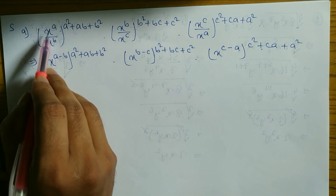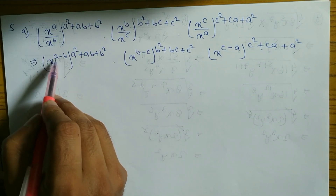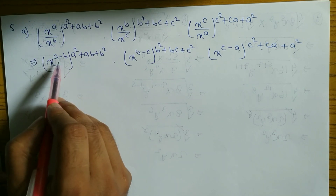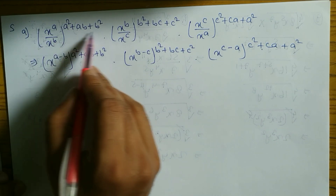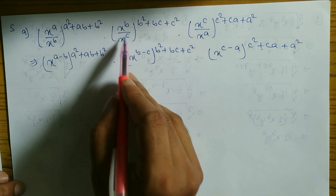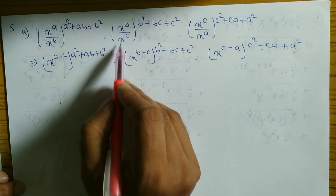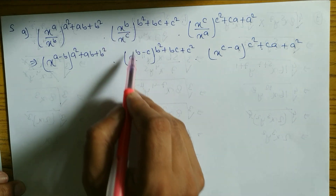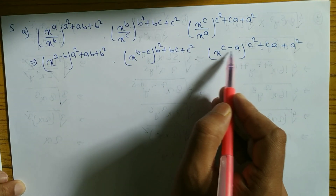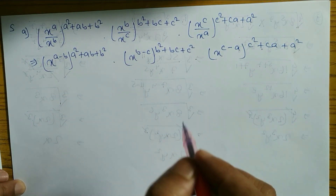Base same — x, x — base same, and in division subtract the power: a minus b, subtract. Here also base same and in division subtract the power. Here also base same and divide subtract the power.